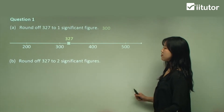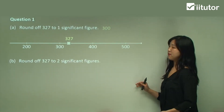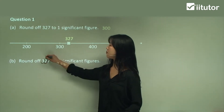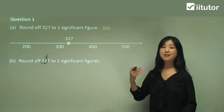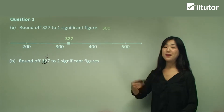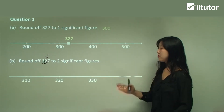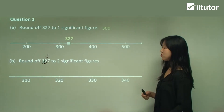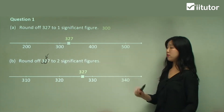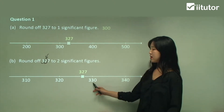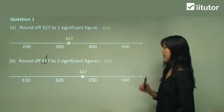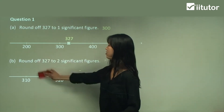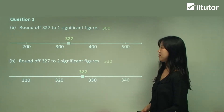Now round 327 to two significant figures. We go one, two — we're looking at the tens place value, so we're going up by tens: three hundred and ten, three hundred and twenty, three hundred and thirty, etc. 327 is between three hundred and twenty and three hundred and thirty, and it's a bit closer to three hundred and thirty. So the answer is three hundred and thirty. Just watch out for where it's closer to and that's the answer.